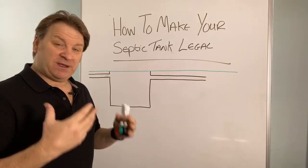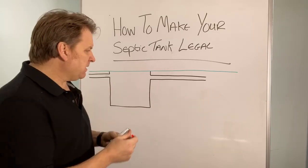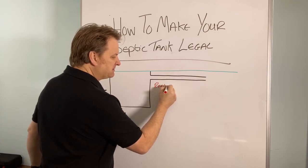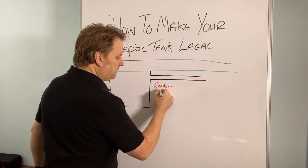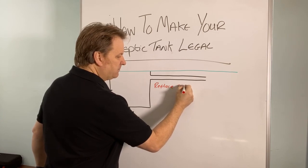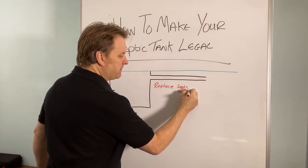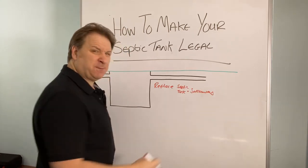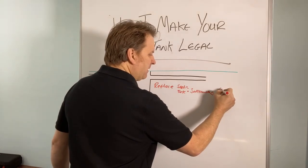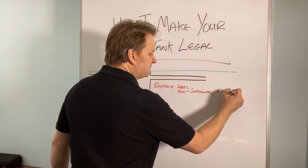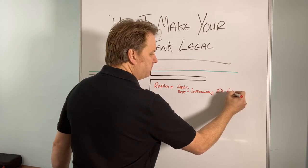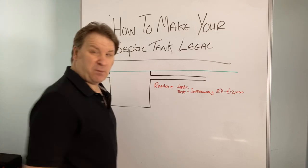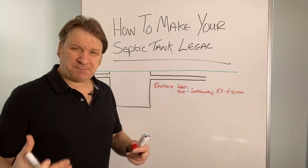They're either replacing them with another septic tank and soak away. Let me just give you some quick figures here. To replace your septic tank and your soak away, typically, if you get a firm in, typical going rate is about eight to twelve thousand pounds. That's typical going rate of what it will cost to replace your septic tank and soak away.